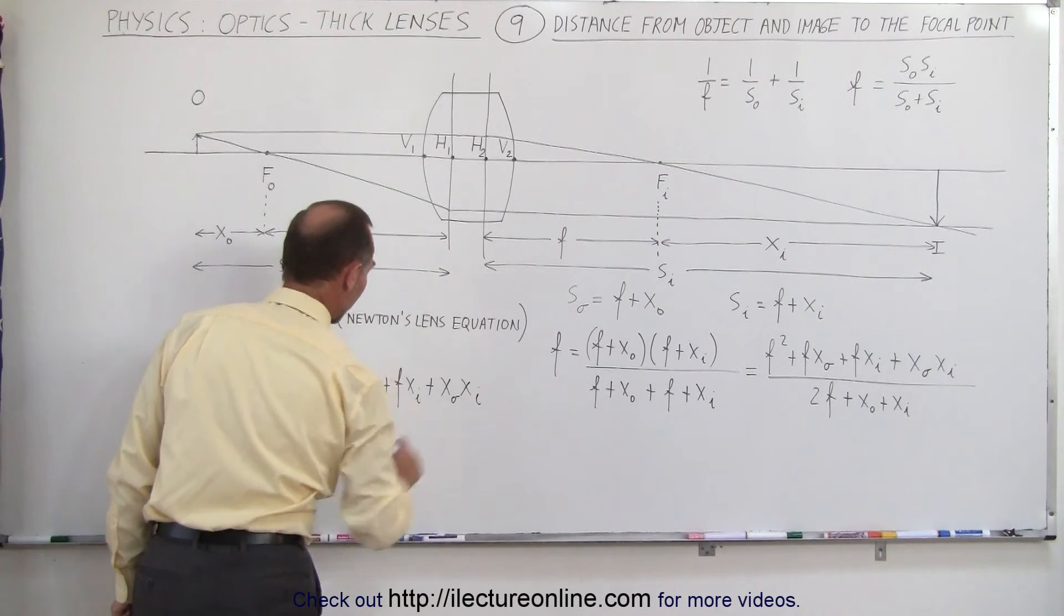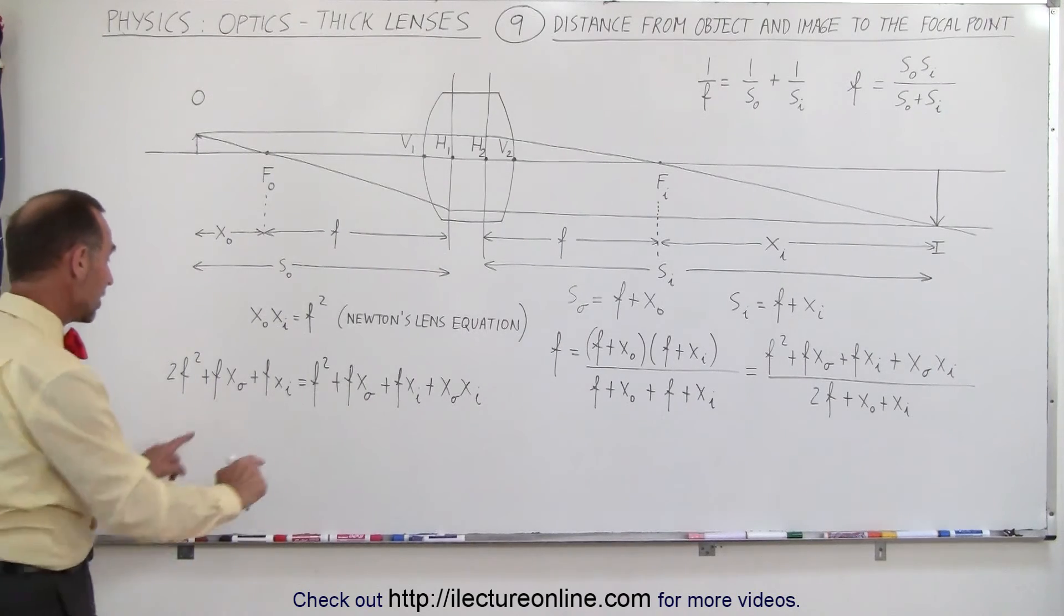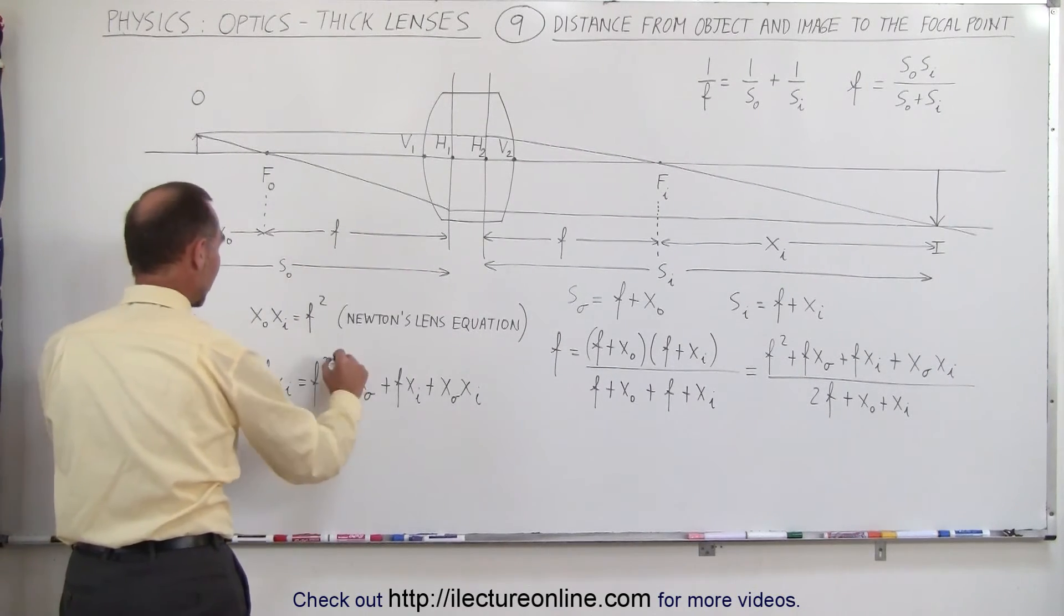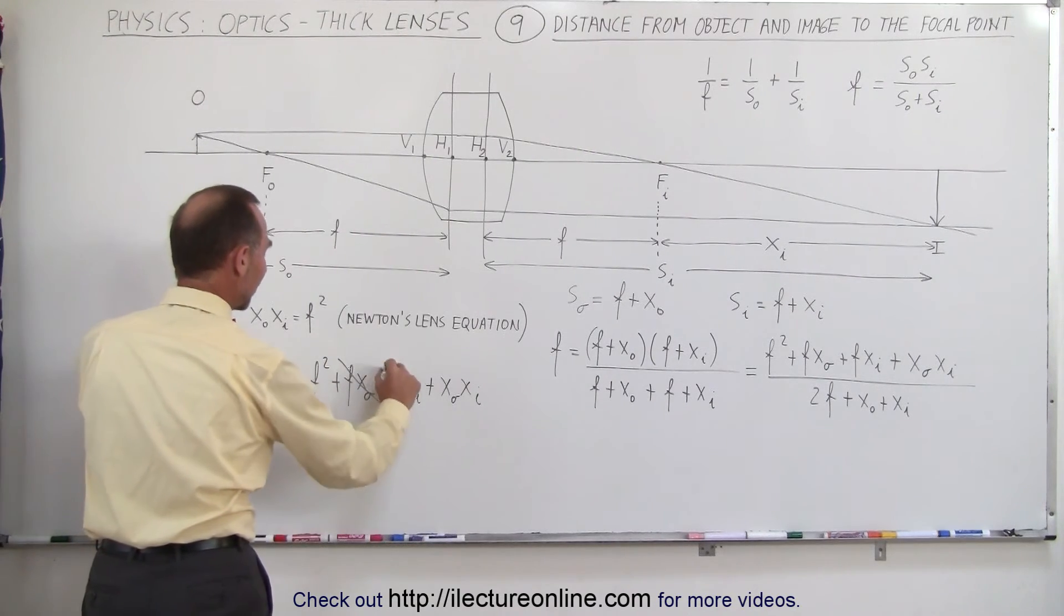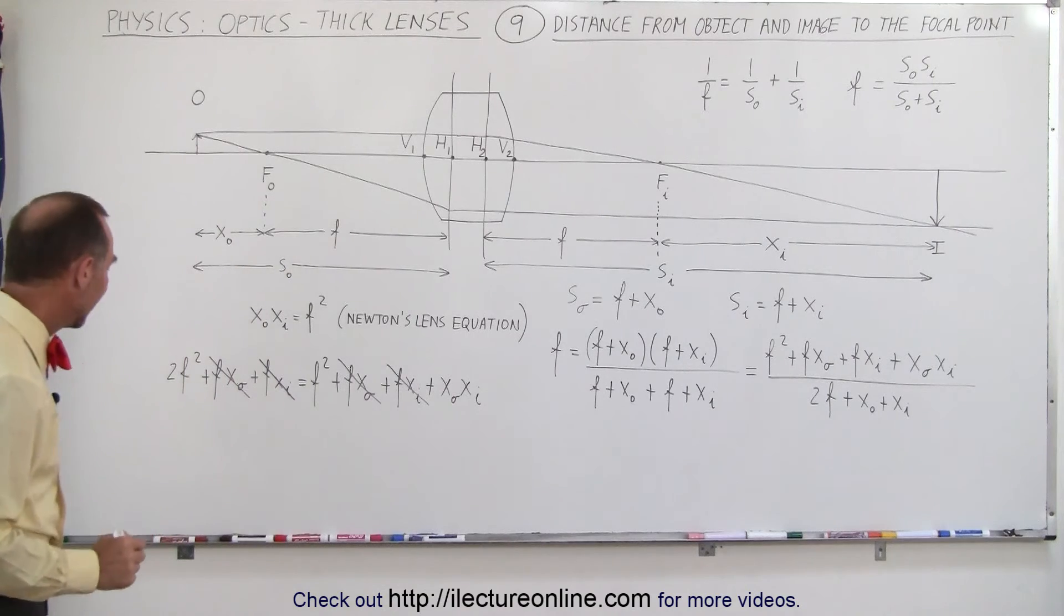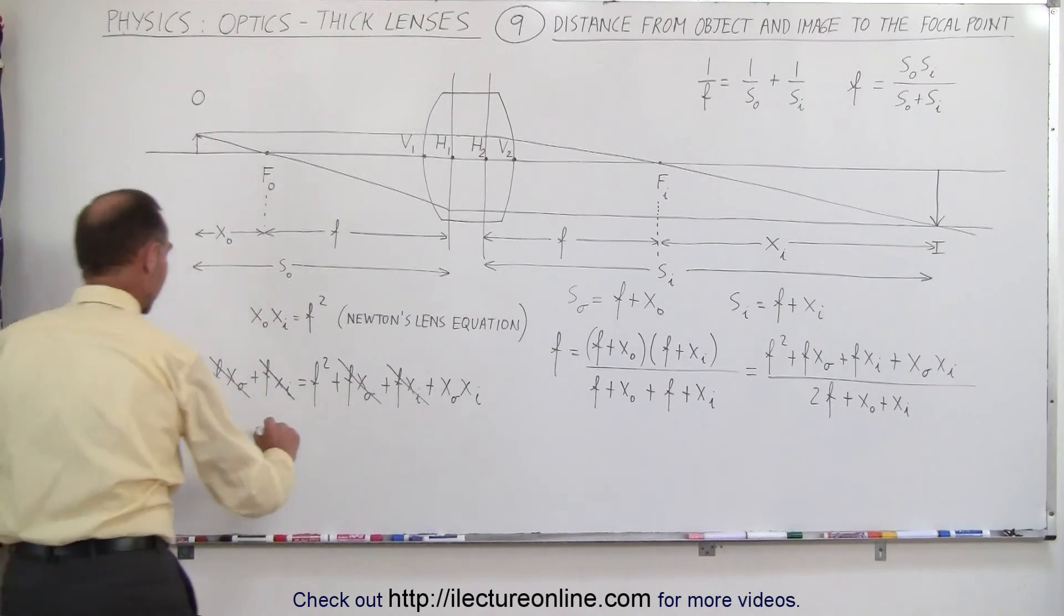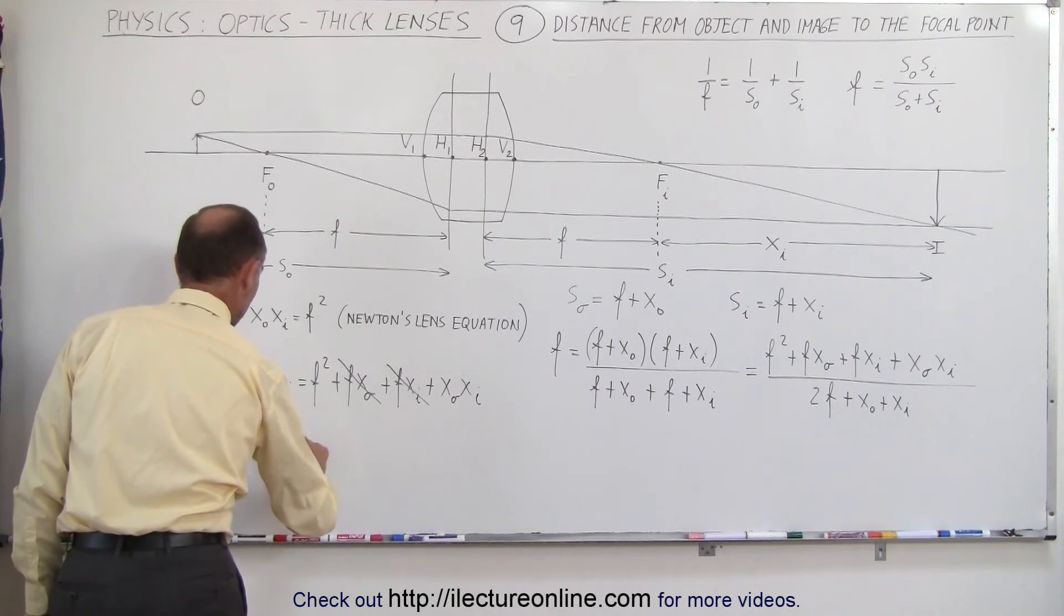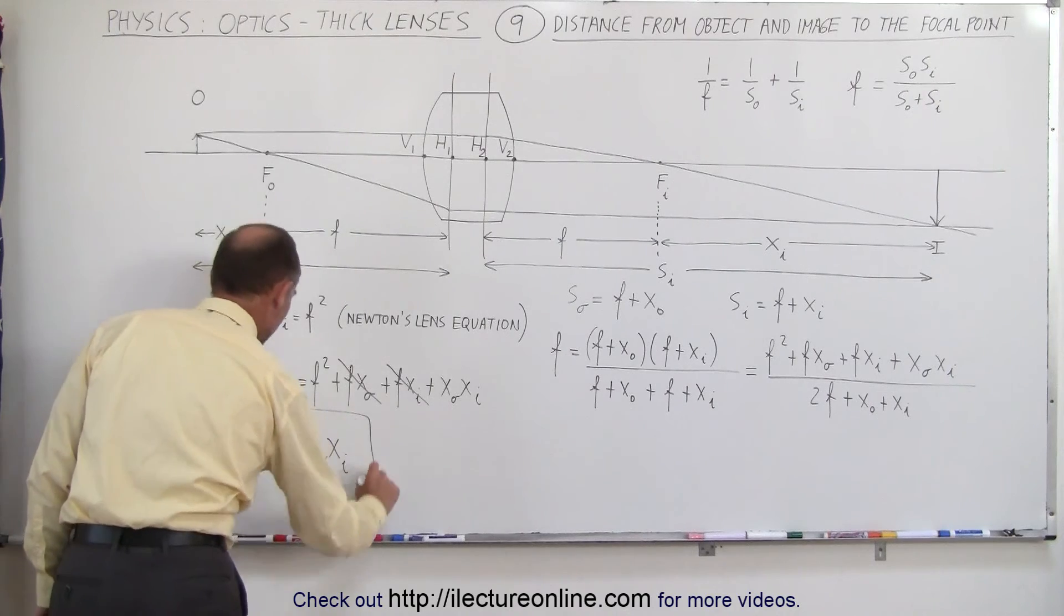Now when you look at both sides, realizing both sides has an f times x sub o so that cancels out, and both sides have an f times x sub i that cancels out as well. And then if I subtract an f squared from both sides then I get on the left side f squared equals on the right side x sub o times x sub i.